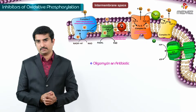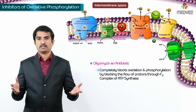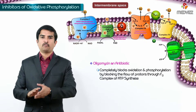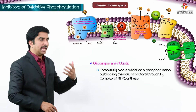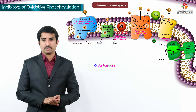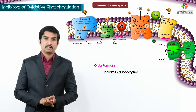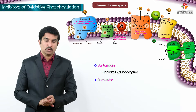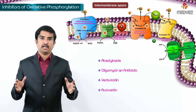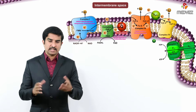Oligomycin, an important antibiotic, completely blocks oxidative phosphorylation by blocking the flow of protons through the F₀ complex of ATP synthase. Venturicidin also inhibits the F₀ complex, while aurovertin inhibits the F₁ subcomplex. These are the key inhibitors of oxidative phosphorylation.